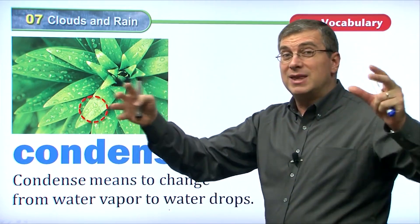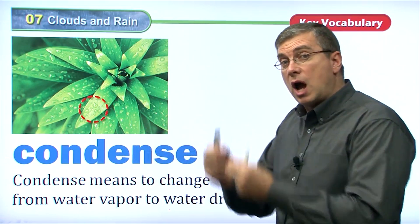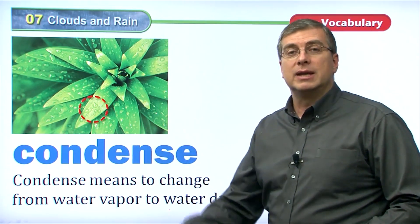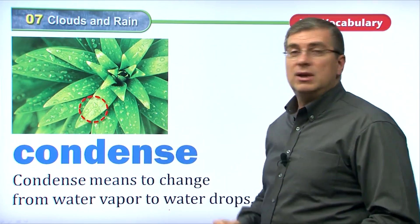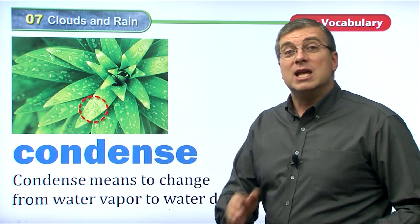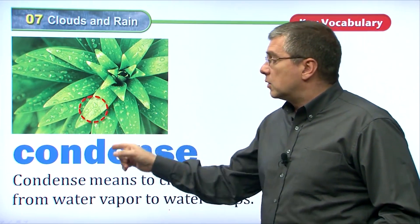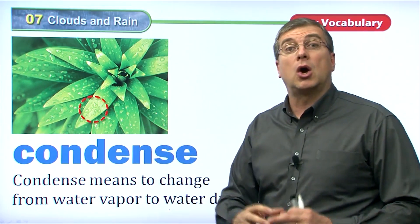Condense means to change from water vapor in the air to water drops. And these water drops fall onto the ground, on the grass, on the leaves. And so even in the morning, if it didn't rain, you will find drops of water, like we can see here in the picture. So condense and evaporate are opposites.